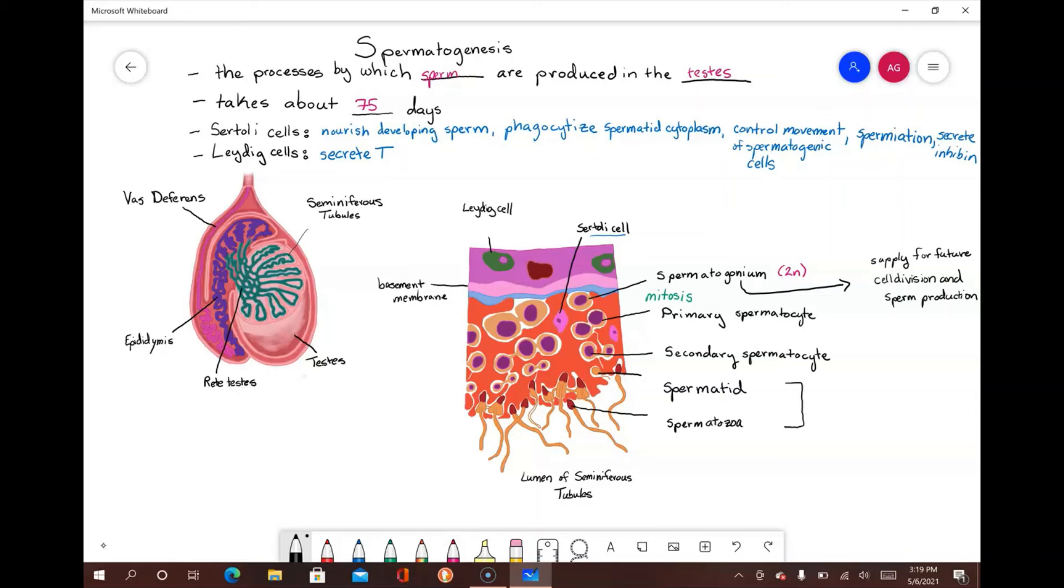The majority of spermatogonia, however, undergo developmental changes. This leads them to differentiate into primary spermatocytes, which are also diploid. Each primary spermatocyte undergoes DNA replication and meiosis I, resulting in two cells called secondary spermatocytes, which are now haploid cells.